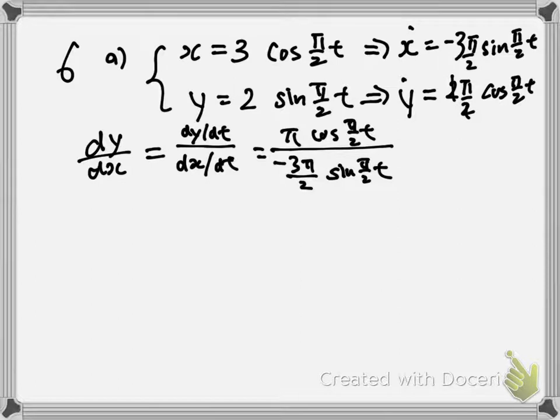If you do the proper cancellation, you are left with negative 2/3 cotangent of π/2t. This simplification is necessary because if you don't simplify, it will be hard to find the second derivative.